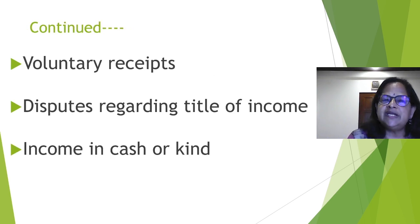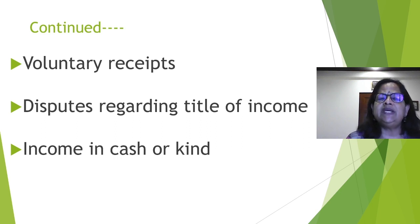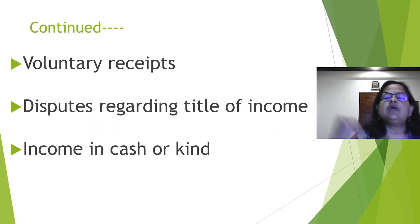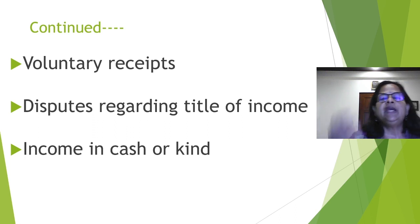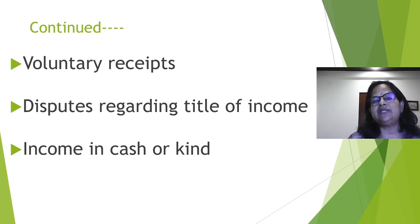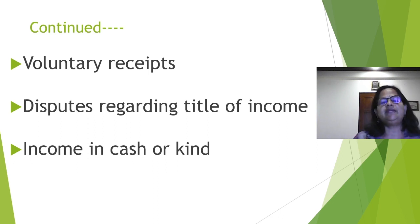Continuing: voluntary receipts. For example, orphanages don't have any regular income. They collect donations from individuals or through company CSR. That is their income, and they use it to meet expenses. They too disclose to the income tax authorities, go for the audit procedure, and if there is anything, they pay the tax.